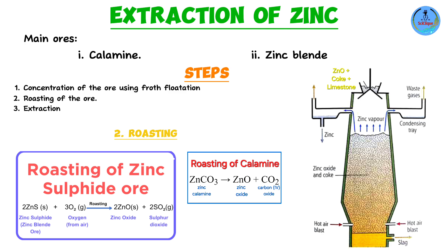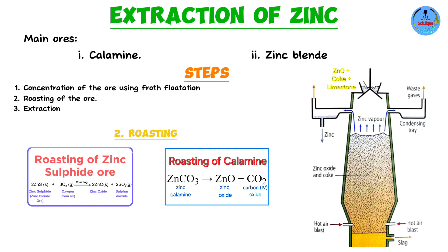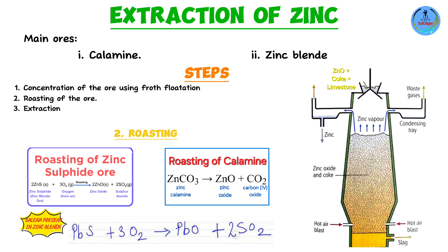Both reactions produce zinc oxide (ZnO), so we can now proceed to the extraction process. One important note: the lead sulfide (galena) present will also be roasted — it reacts with oxygen to form lead oxide (PbO) plus sulfur dioxide (SO₂). We'll come back to how this lead is extracted, but for now we have zinc oxide and can begin extraction.